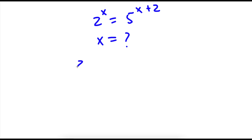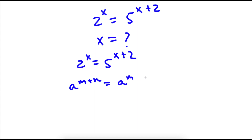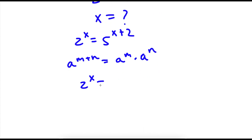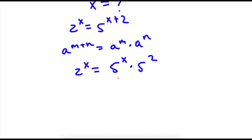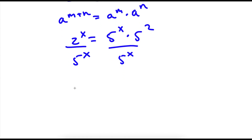From our equation here, the first thing I'm going to do is apply the exponent rule: if I have something in the form a to the power of m plus n, this is equal to a to the power of m times a to the power of n. So in this case, 5 to the power of x plus 2 equals 5 to the power of x times 5 to the power of 2. Now, I'm going to divide both sides by 5 to the power of x. So now I have 2 to the power of x over 5 to the power of x is equal to 5 squared.